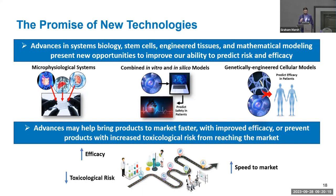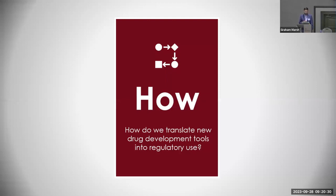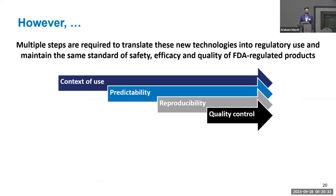These advances may bring products to market faster with improved efficacy, or prevent products with increased toxicological risk from reaching the market. But it's actually quite difficult — multiple steps are required to translate these new technologies into regulatory use while maintaining the same standards of safety, efficacy, and quality of FDA-regulated products. The most important concept I'm hoping people think about at this workshop is context of use.